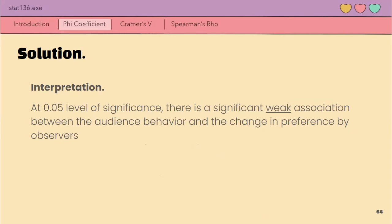Thus, at 0.05 level of significance, there is a significant weak association between the audience behavior and the change in preference by observers. Weak siya kasi our phi coefficient is 0.2833 lang, while significant siya dahil significant nga ang ating x square. Thus, meron ring na significant din ang ating phi coefficient. So, that's it for phi coefficient. Thanks again.